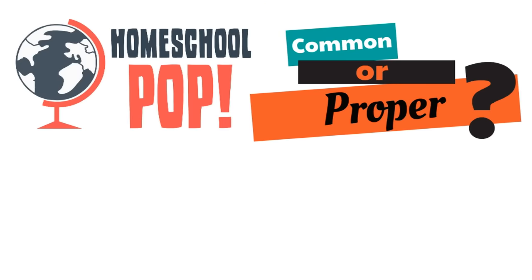How about this one? Chicago. Is this a common or a proper noun? It's proper. We have two clues: the first one is that it's a specific place — Chicago. And also, what's the other clue? It starts with a capital letter. We know that Chicago is a proper noun. How about this noun? Teacher. This might be a little tricky. Is this a common or a proper noun? It's a common noun — it's a type of person. Also, the lowercase letter tells us that this is a common noun.